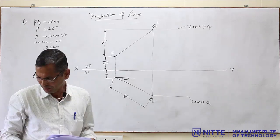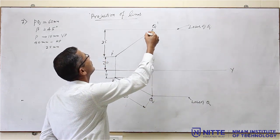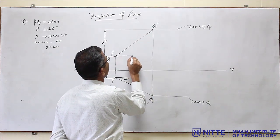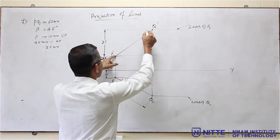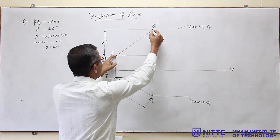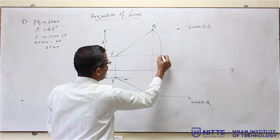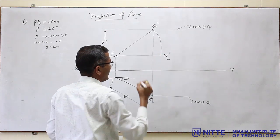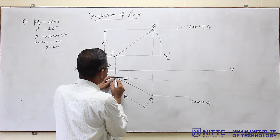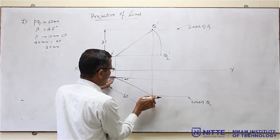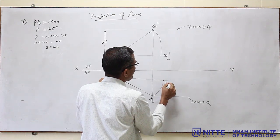Front view and top view is over. Now, remaining is to find the true length and true inclinations. Draw a horizontal line and take the compass — P dash as center, P dash Q dash as radius. Drop an arc (light and continuous). This point becomes Q2 dash. Similarly, extend and with P as center, radius equal to PQ (60mm), draw an arc — this becomes Q1.